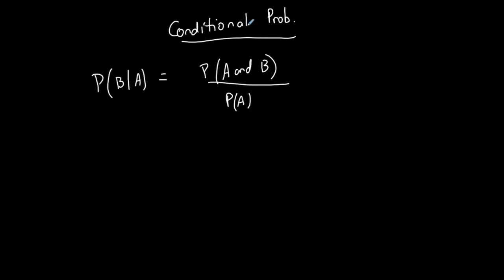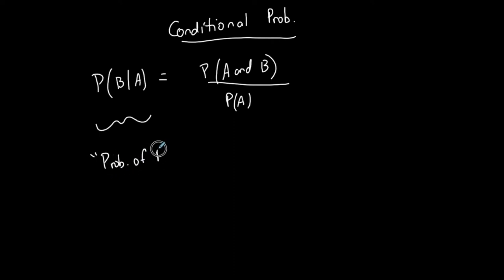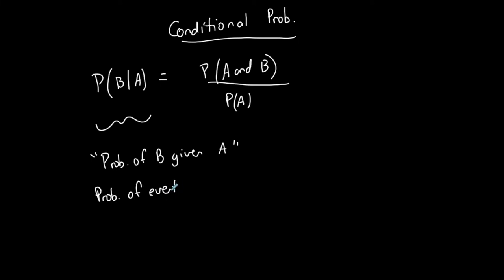So what does that mean? This notation states the probability of event B given event A. It represents the probability of event B occurring under the condition, or given, that event A has already occurred.